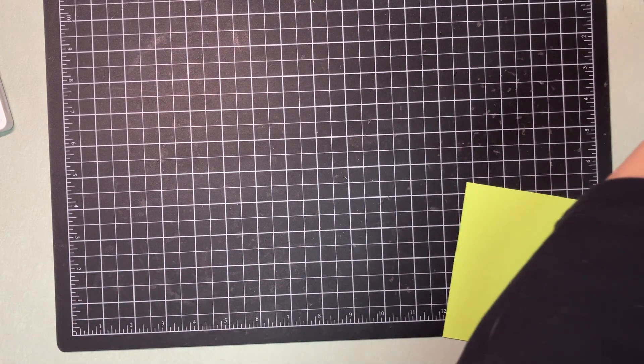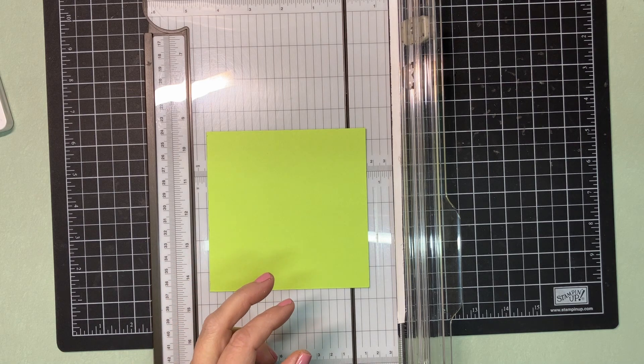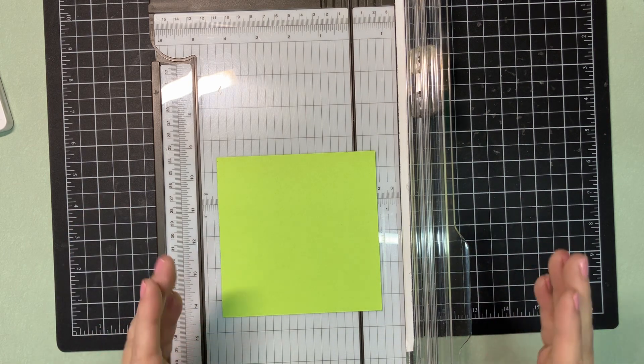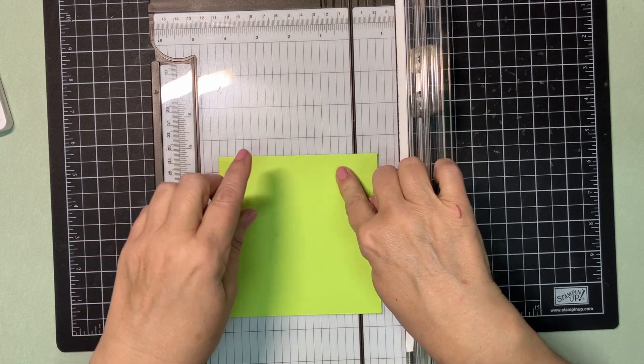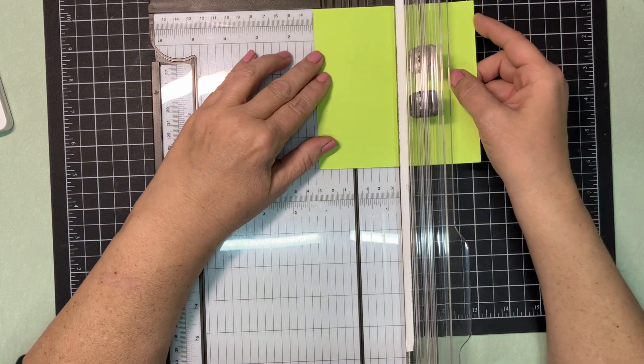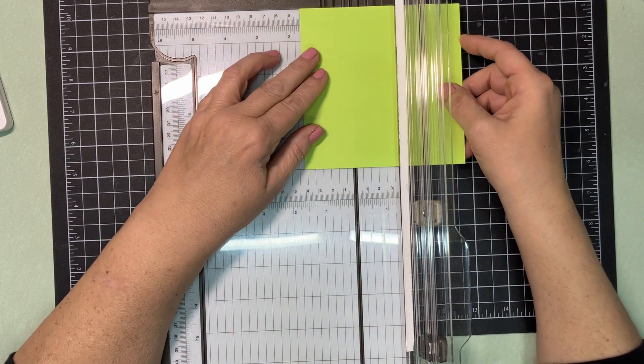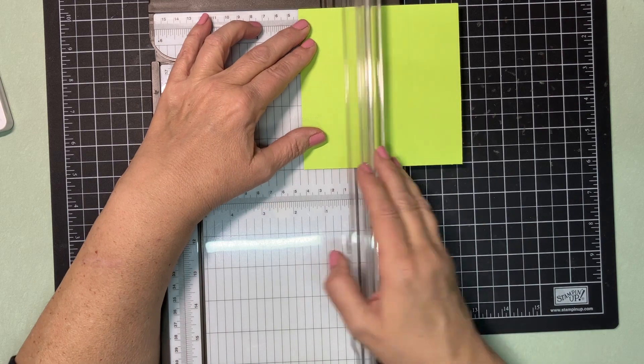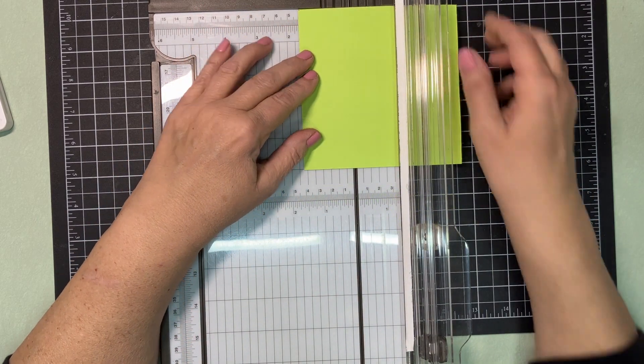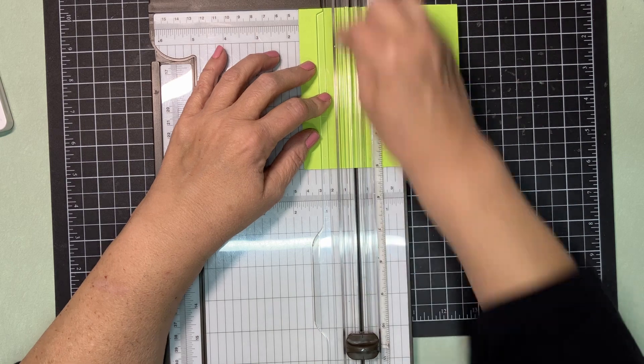Okay, so you can do this on the scoreboard or you can do this on your trimmer. I'm just going to go ahead and use the trimmer. Now, you need to score this five by five inch piece at one and five eighths on all four sides. There's no, a lot of times they'll say score two and then two, you can do two and four. This one you have to do each side separately. So, that's one and five eighths.